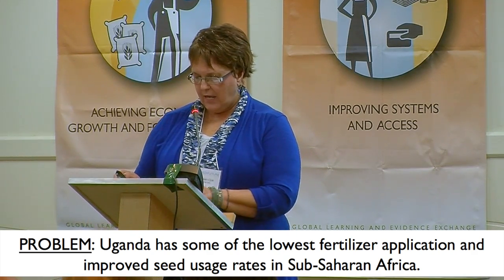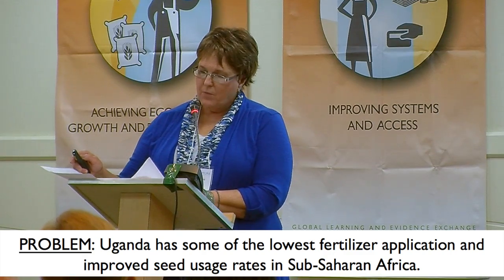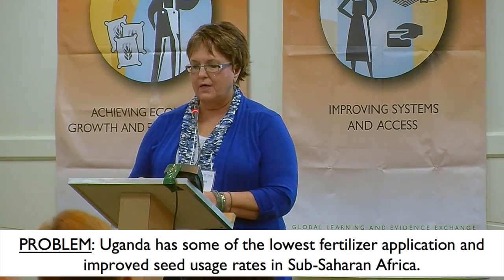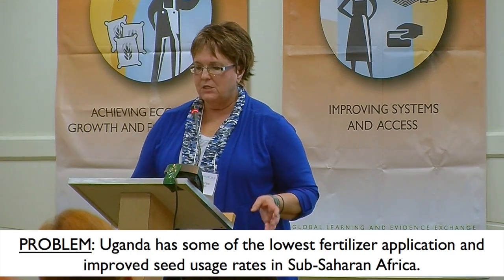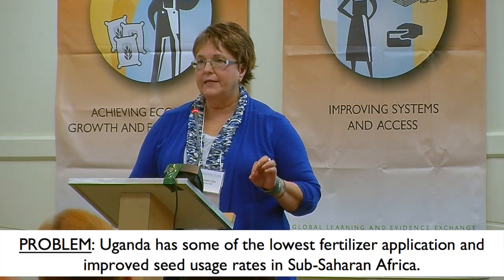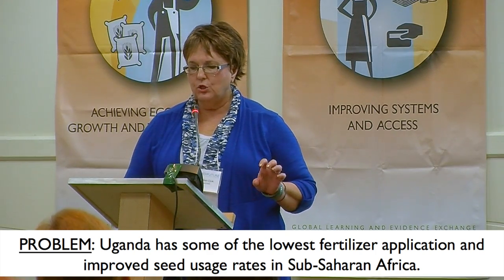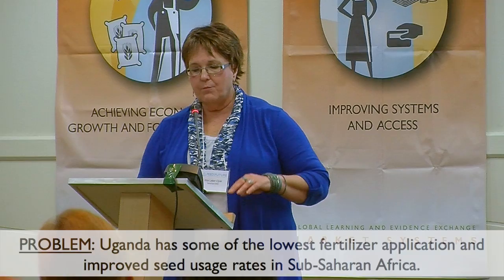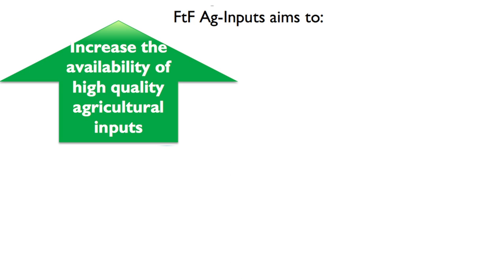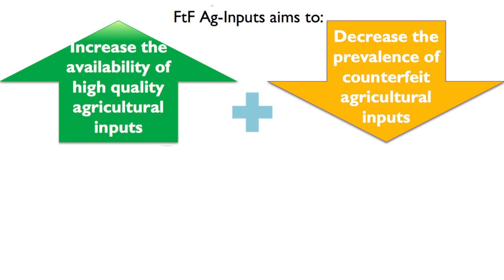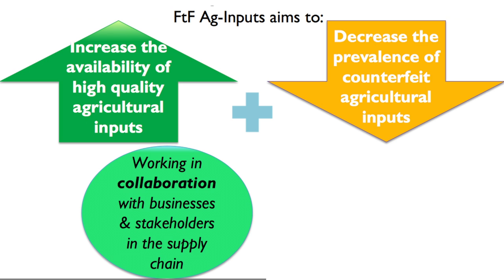To combat this, the Ag Inputs activity adopted a market facilitation approach to drive change. Rather than providing direct service delivery, the Ag Inputs activity and its partners should look at ways to provide the right incentives to get market actors to exhibit the right kinds of behavior. Our objective is to increase the availability of high-quality agricultural inputs, to decrease the prevalence of counterfeits, using both a market systems facilitation and CLA approach.